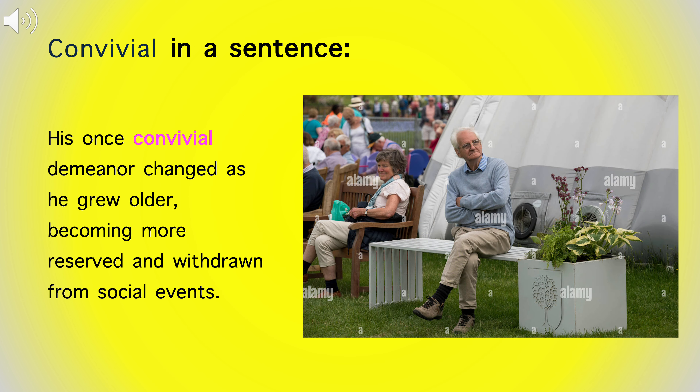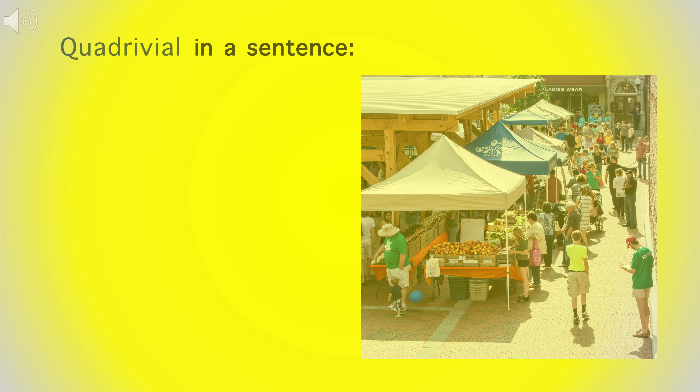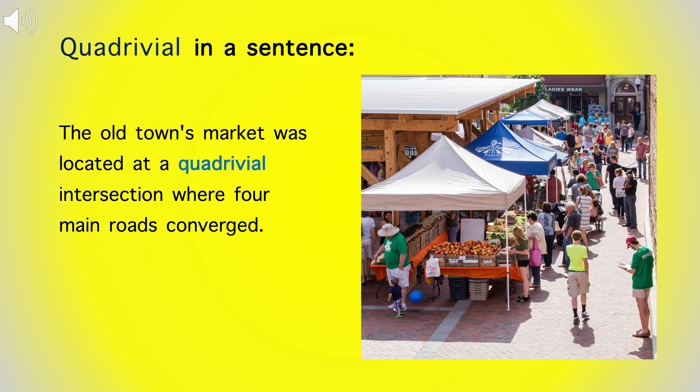His once convivial demeanor changed as he grew older, becoming more reserved and withdrawn from social events. The old town's market was located at a quadrivial intersection where four main roads converged.